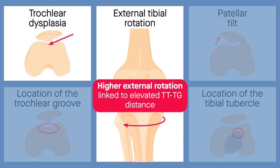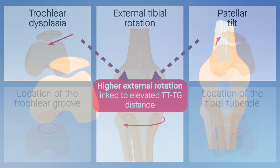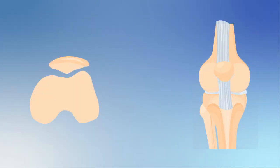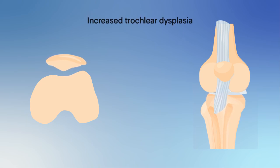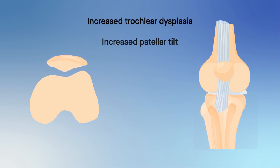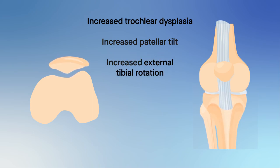Meanwhile, trochlear dysplasia, as well as patellar tilt, was found to mediate this relationship. These findings paint a more nuanced picture of the processes leading to patellar instability. The researchers proposed that increasing degrees of trochlear dysplasia lead to increased patellar tilt, which, through the patellar tendon, causes the tibia to rotate externally.